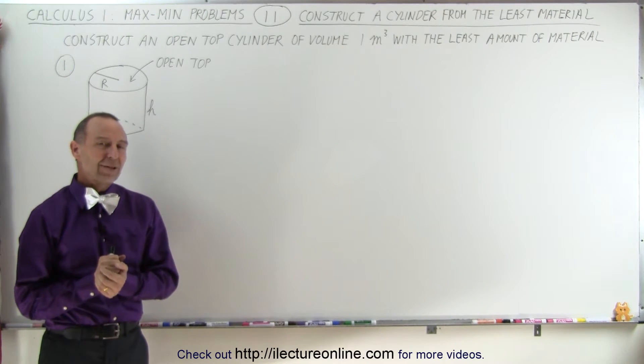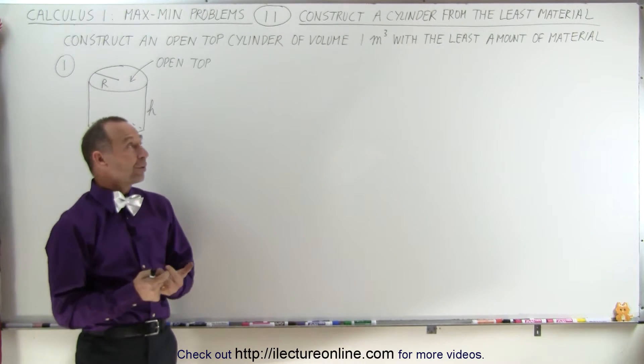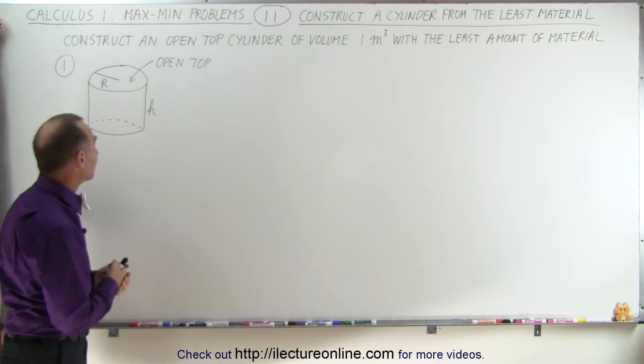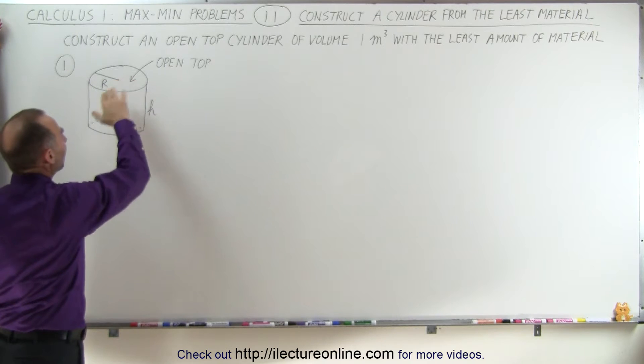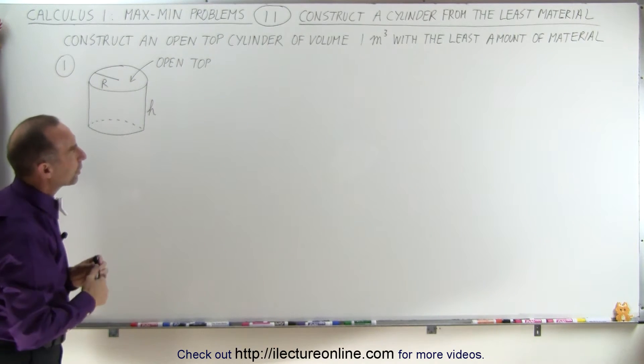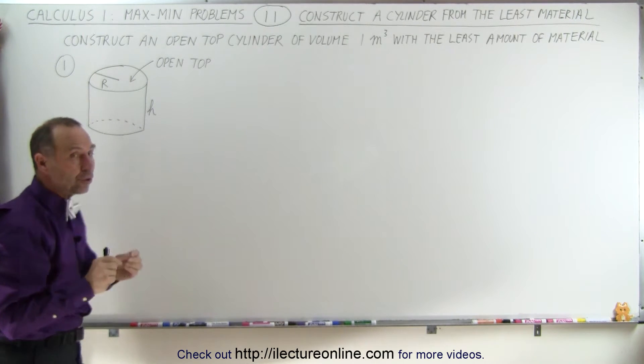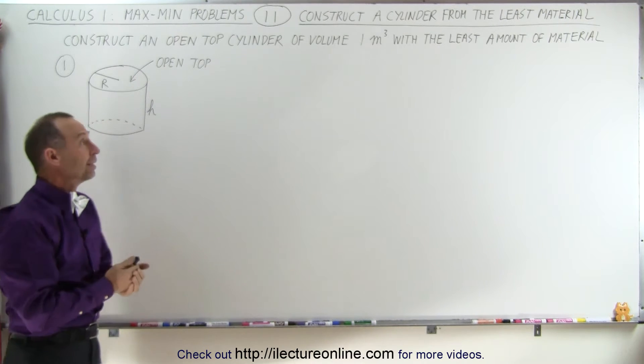Welcome to ElectronLine. Here's another one of those typical examples for a max-min problem. We are to construct a cylinder that has an open top, that has a given volume of one cubic meter, and we're supposed to use the least amount of material. How do we do that?